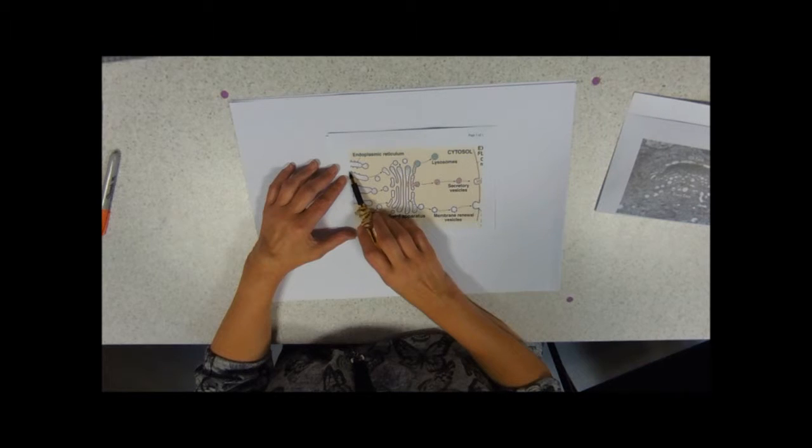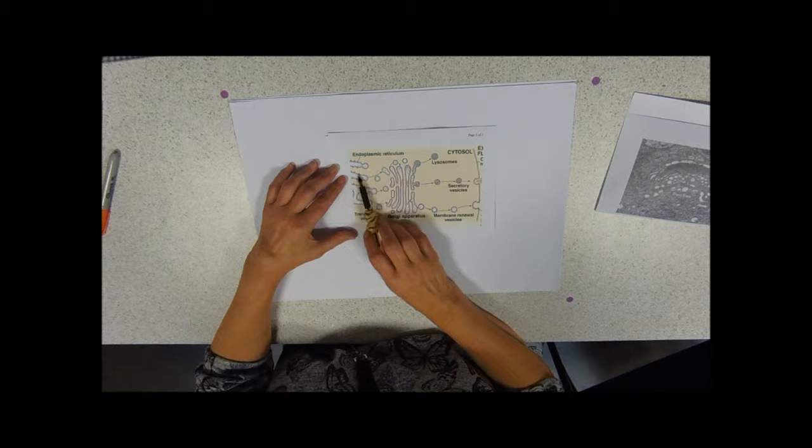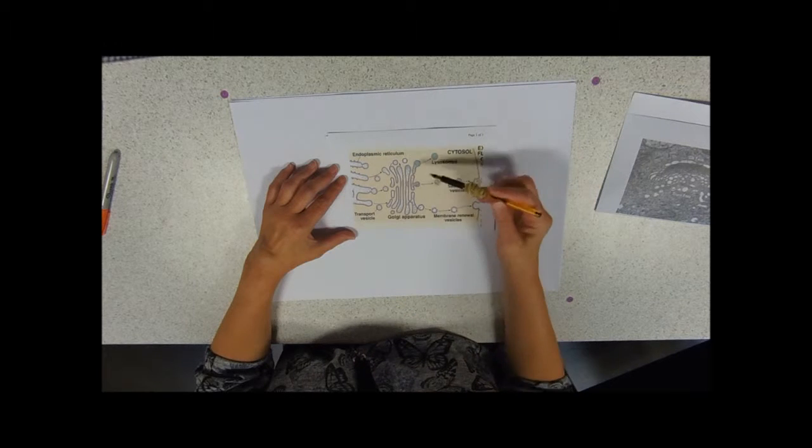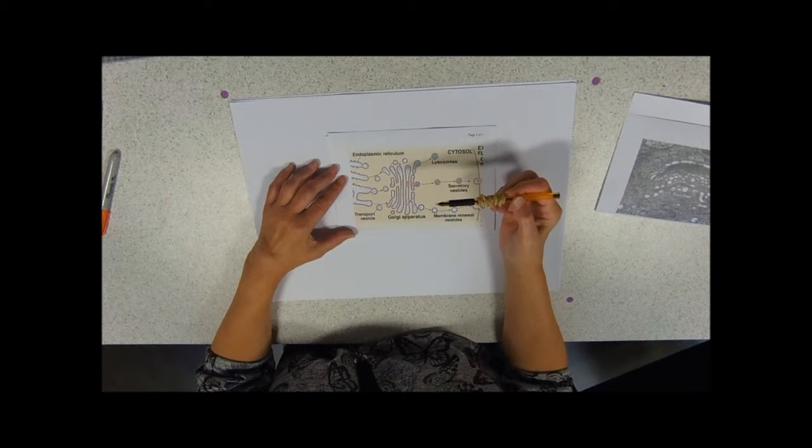What's coming off here is the primary structure of the protein, a little line of sequence of amino acids. But what's emerging on this side in these vesicles are fully formed folded proteins.